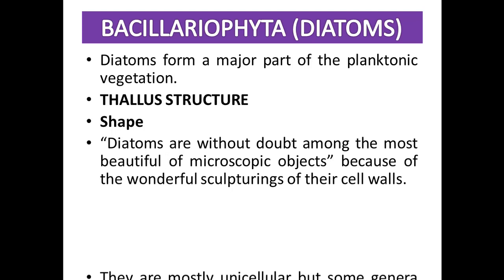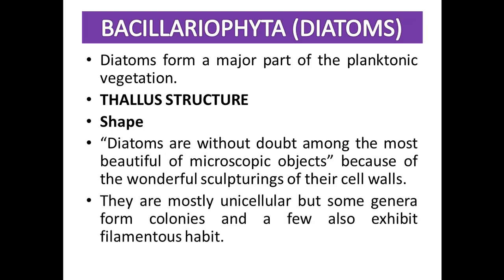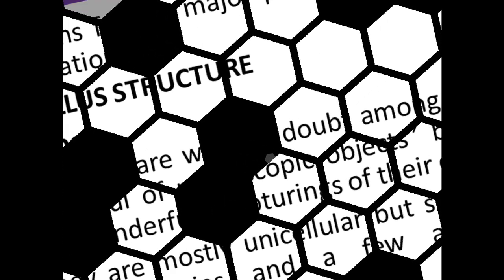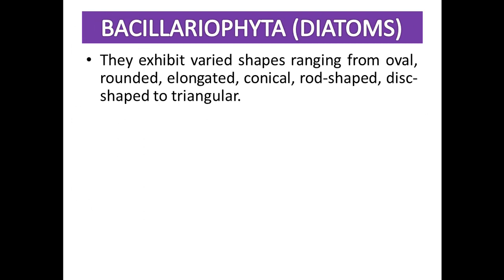Diatoms are unicellular, but some genera form colonies and also exhibit a filamentous habit. They exhibit a variety of shapes ranging from oval, rounded, elongated, conical, rod-shaped, disc-shaped, to triangular.